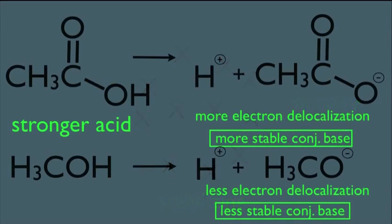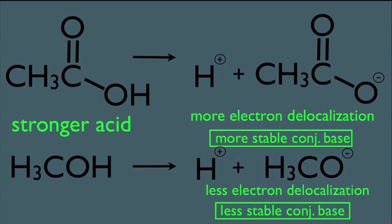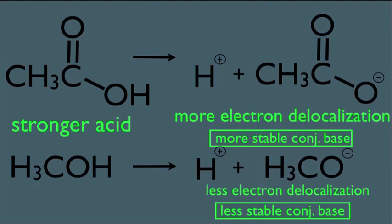So, going back to our example here, what we're saying is the top conjugate base, again, has more electron delocalization, and the bottom one has less electron delocalization. It just so happens that that bottom conjugate base, you cannot move the electrons around. And again, this is for reasons that are beyond the scope of this particular lecture.